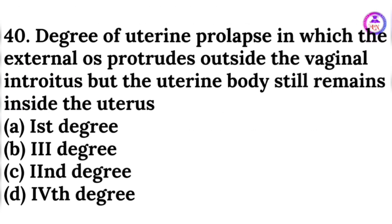The degree of uterine prolapse in which the external os protrudes outside the vaginal introitus but the uterine body still remains inside is the second degree prolapse.